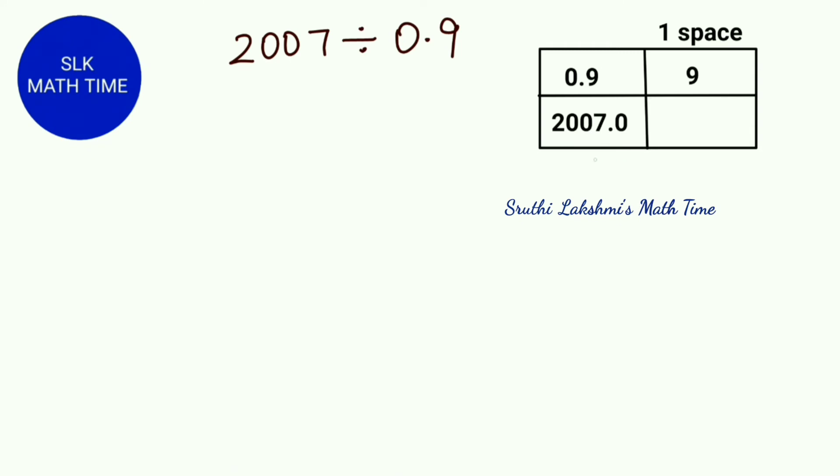So we also have to move this decimal point one space to the right, which is 20070. So let's divide 20070 divided by 9.